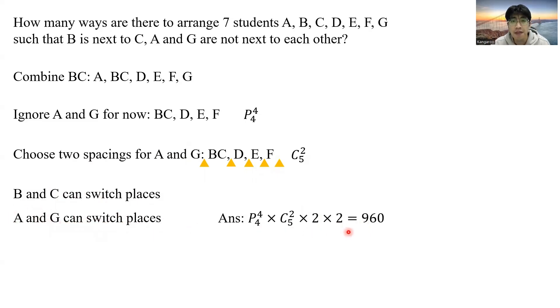So there are total of 960 ways to arrange these seven students according to these two conditions here. This is a revision on the bunching method and the partitioning method that we learned in our class.